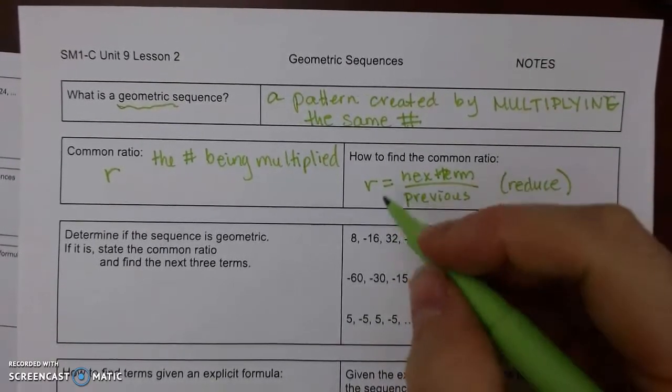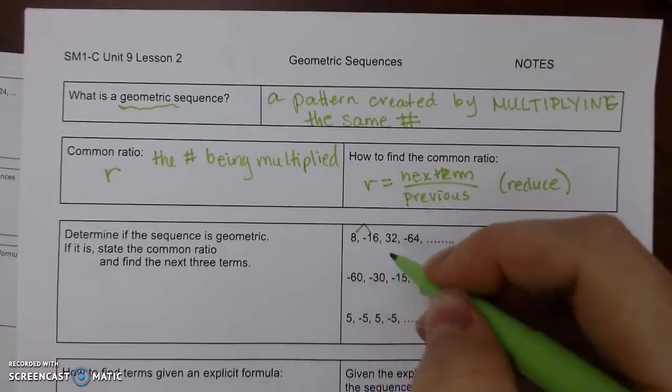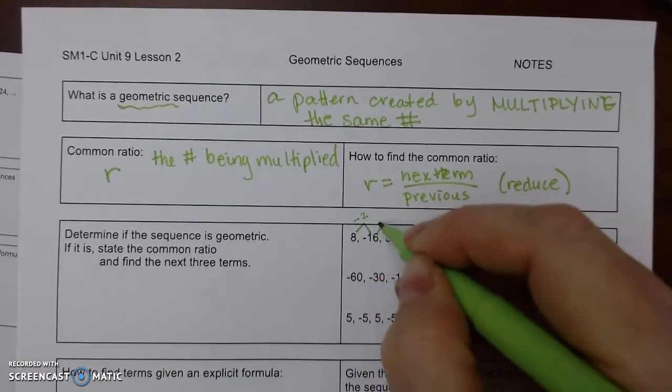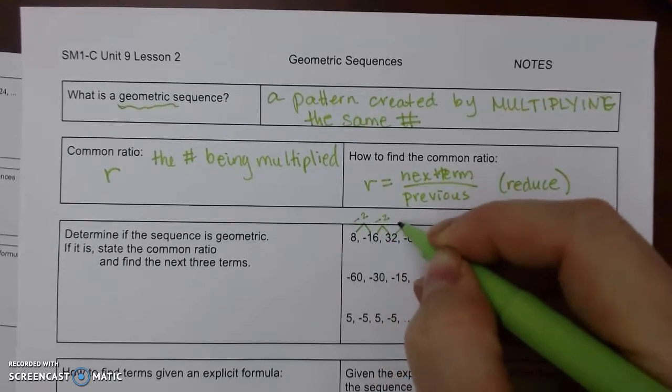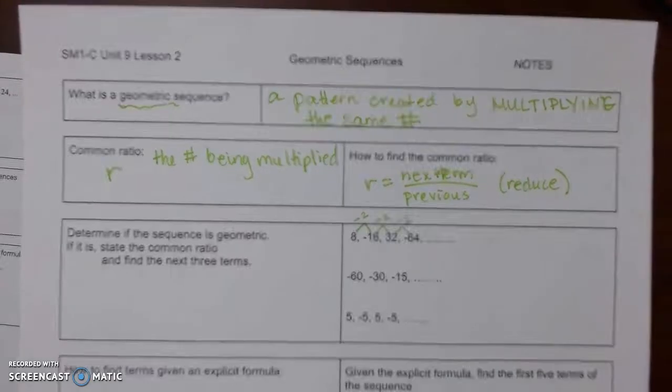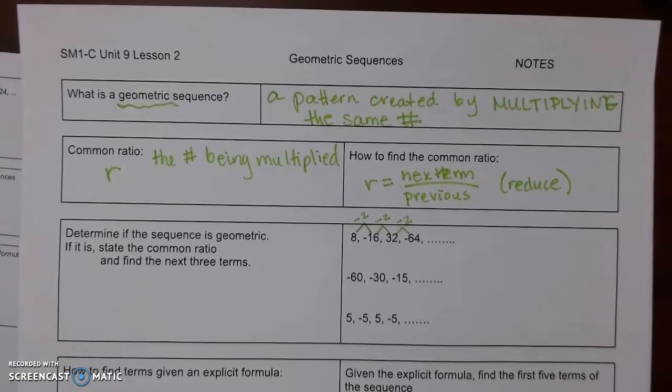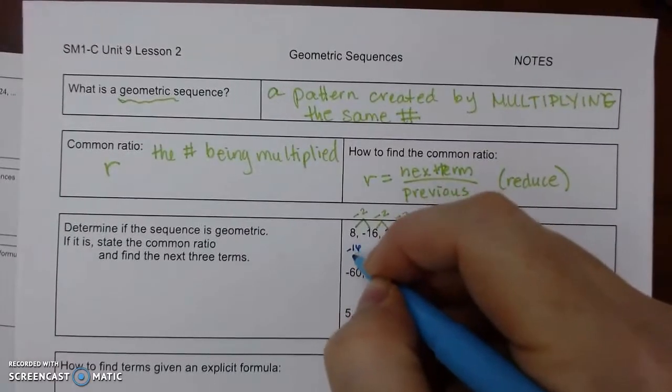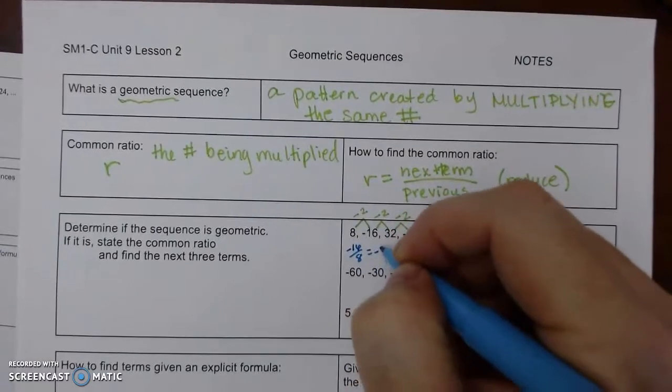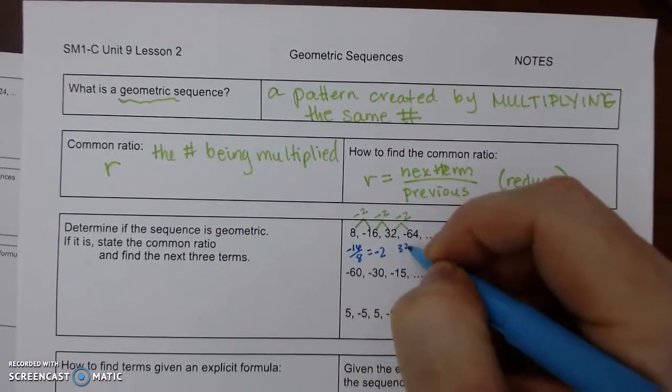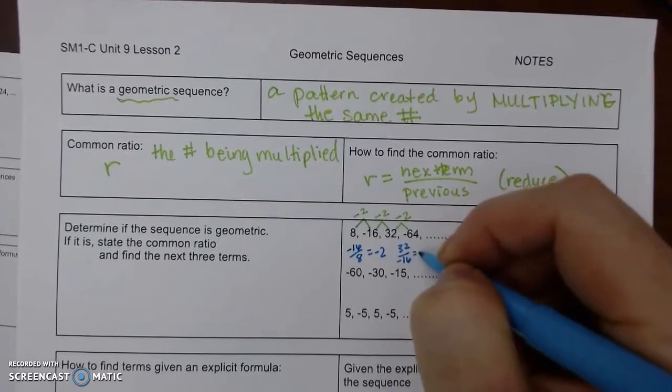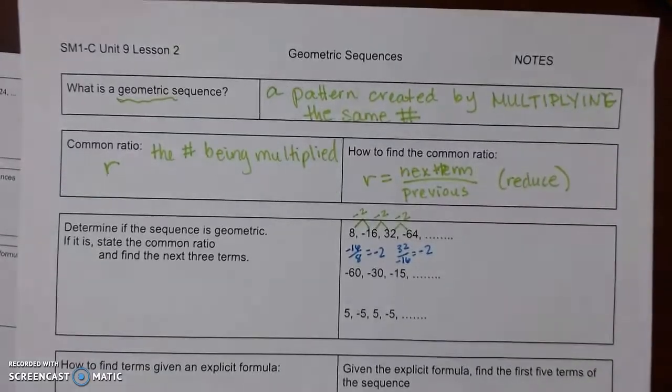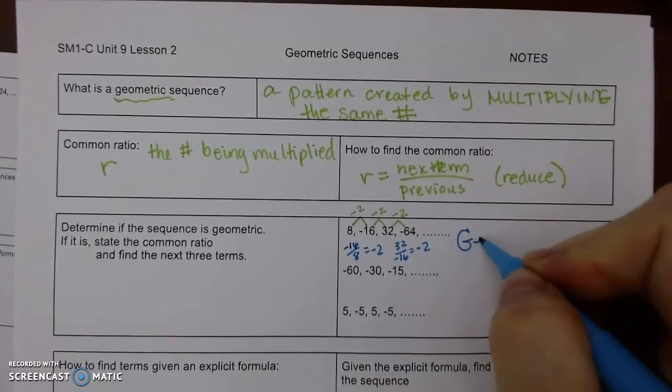This one might be a little bit harder, but I can tell by looking I'm going to multiply by negative 2, we multiply by negative 2, and we multiply by negative 2. If you're not really good at the arithmetic, you can always take any second term and divide it by the previous term. So do whatever you feel comfortable with. Yes, this is geometric.